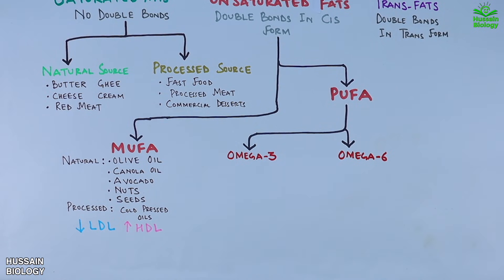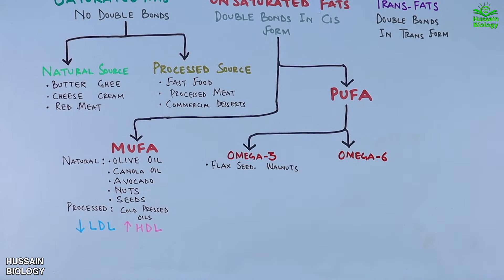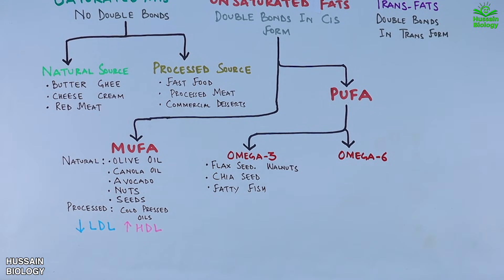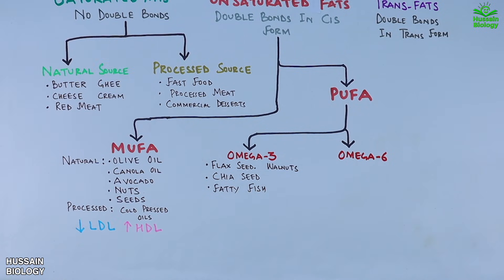When we look at PUFA, we have first omega-3 fatty acids. Omega-3 sources include flax seeds, walnuts, chia seeds, and fatty fishes like salmon, mackerel, herring, sardines, and tuna. These lower LDL and improve HDL.